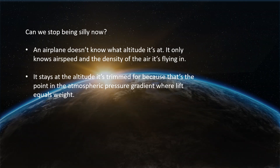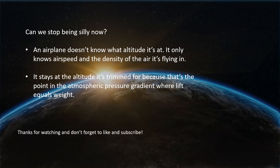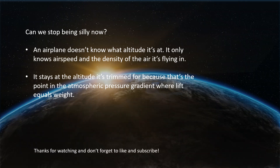So can we stop being silly now? An airplane doesn't know what absolute altitude it's at. It only knows the airspeed and the density of the air it's flying in. If we have trimmed the airplane to fly at a particular altitude, it will continue to do that until we force it to fly at some different altitude. It stays there because that is the point in the atmospheric pressure gradient where lift equals weight. There's no more to it than that — just that simple. Thanks for tuning in and watching. Don't forget to like and subscribe, and don't make me come looking for you.